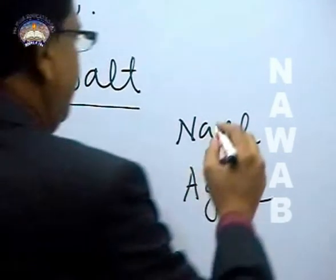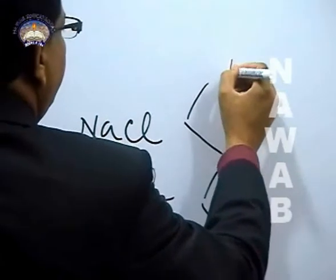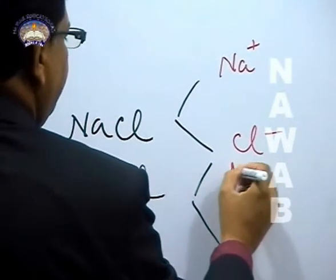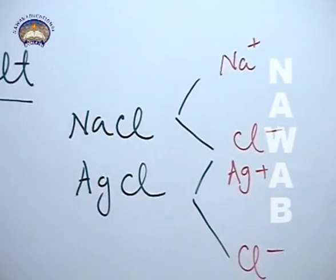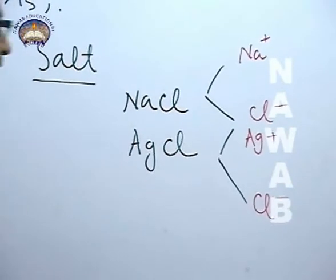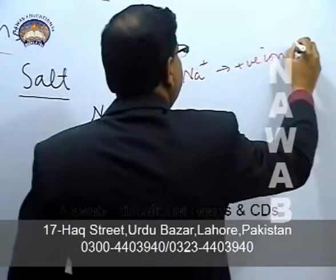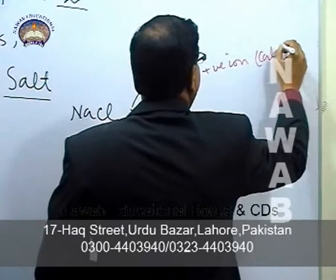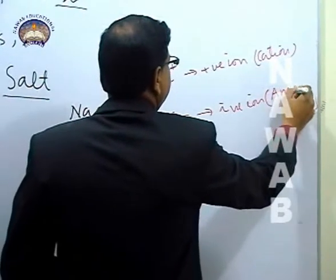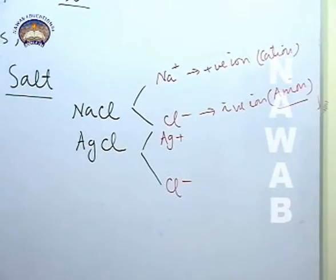Like, let's see in these examples: one ion is sodium plus, the other is chloride ion. In AgCl, you have silver plus and chloride ion. So you can see, the salts consist of two ions - one positive cation and one negative anion.